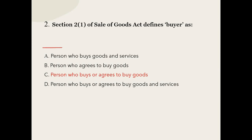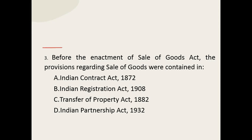Q3: Before the enactment of Sale of Goods Act, the provisions regarding sale of goods were contained in which Act? The options are: Indian Contract Act 1872, Indian Registration Act 1908, Transfer of Property Act 1882, Indian Partnership Act 1932. The correct option is Indian Contract Act 1872.